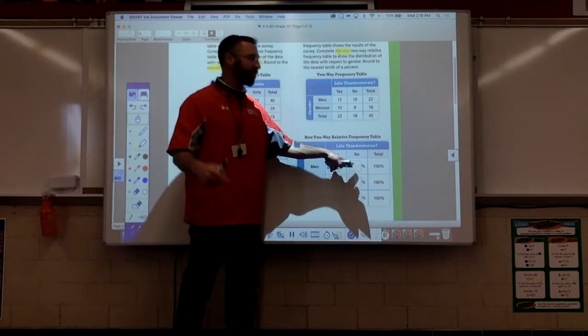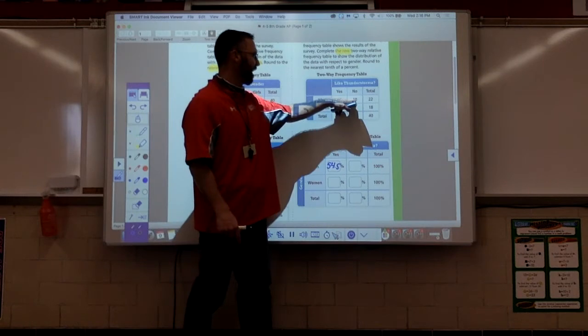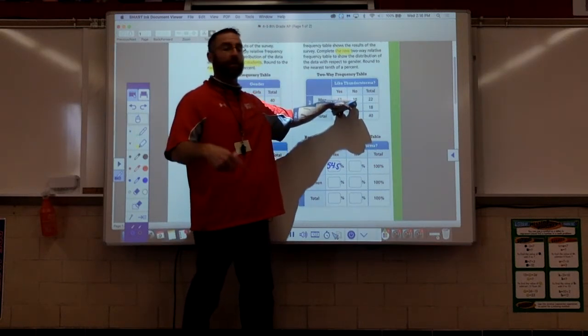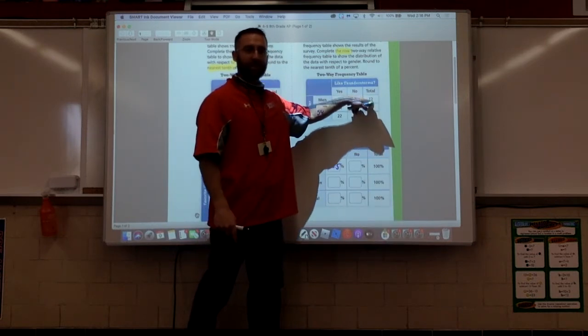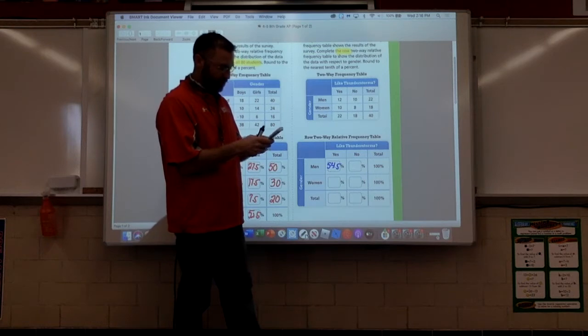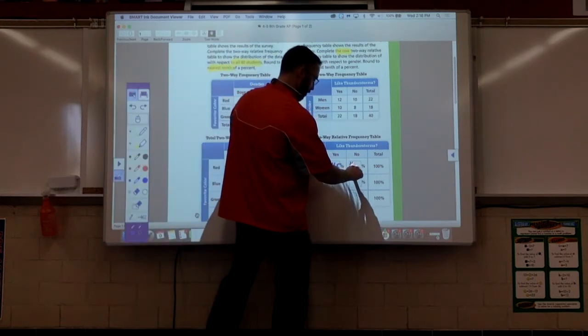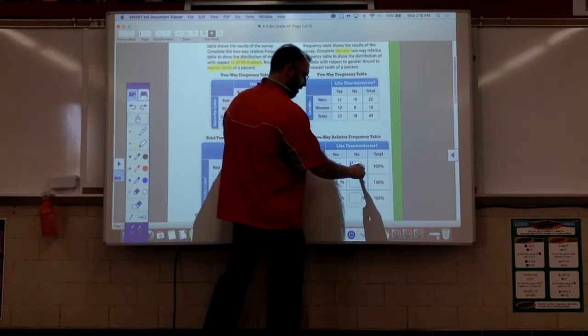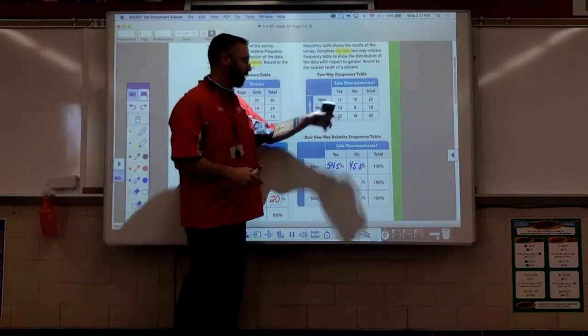When we look at the percent for men, it's a row relative frequency table. This is 10 men do not like thunderstorms, 10 out of the total number of men, 22. So 10 divided by 22 times 100, there's a nice one, 45.45. That's going to round up to be 45.5 percent.